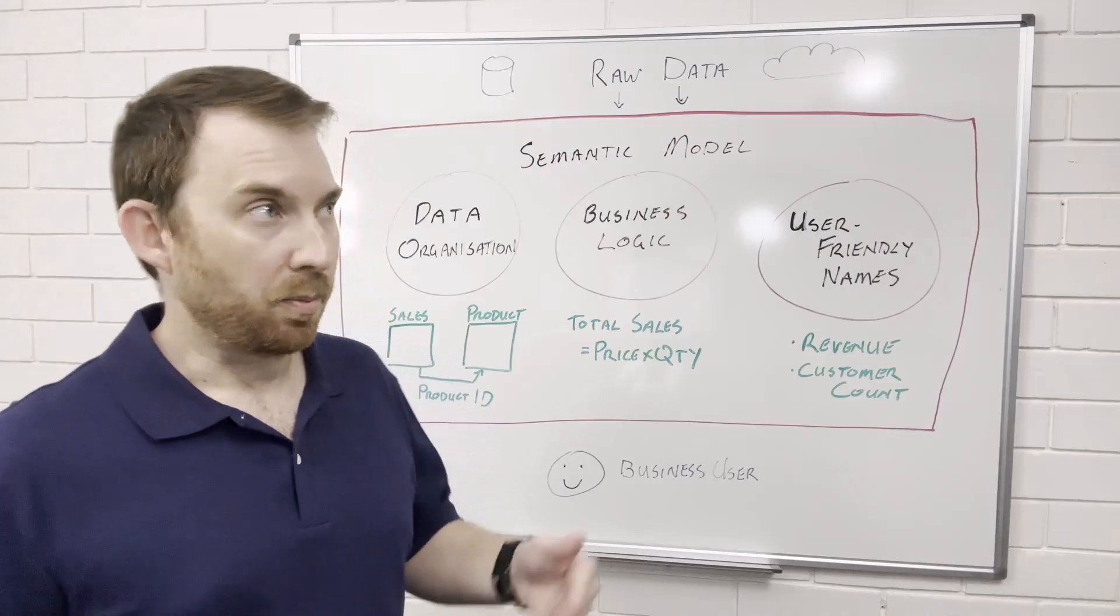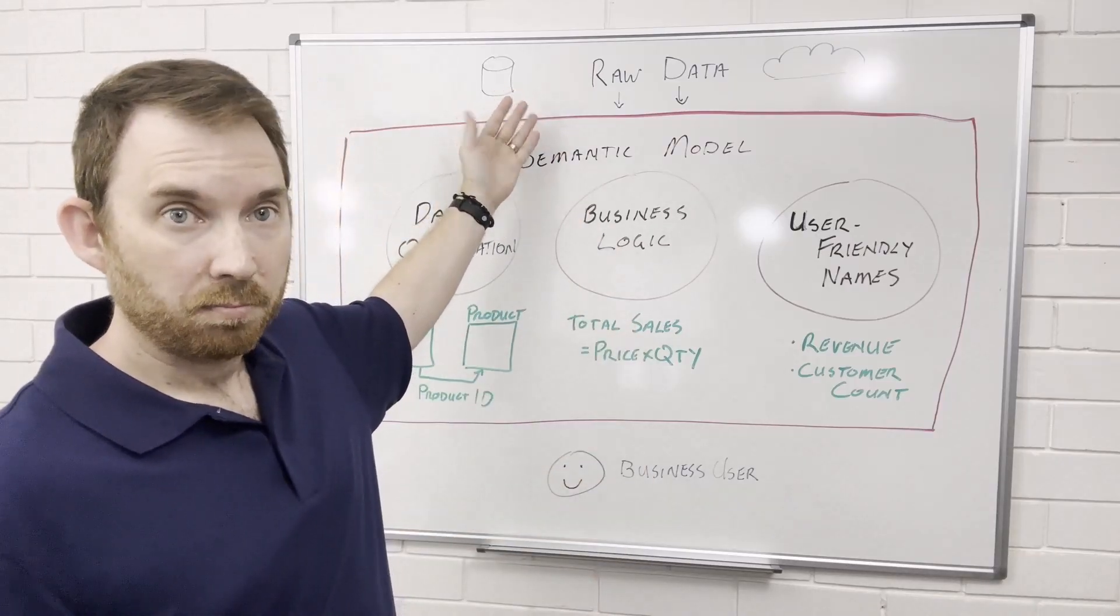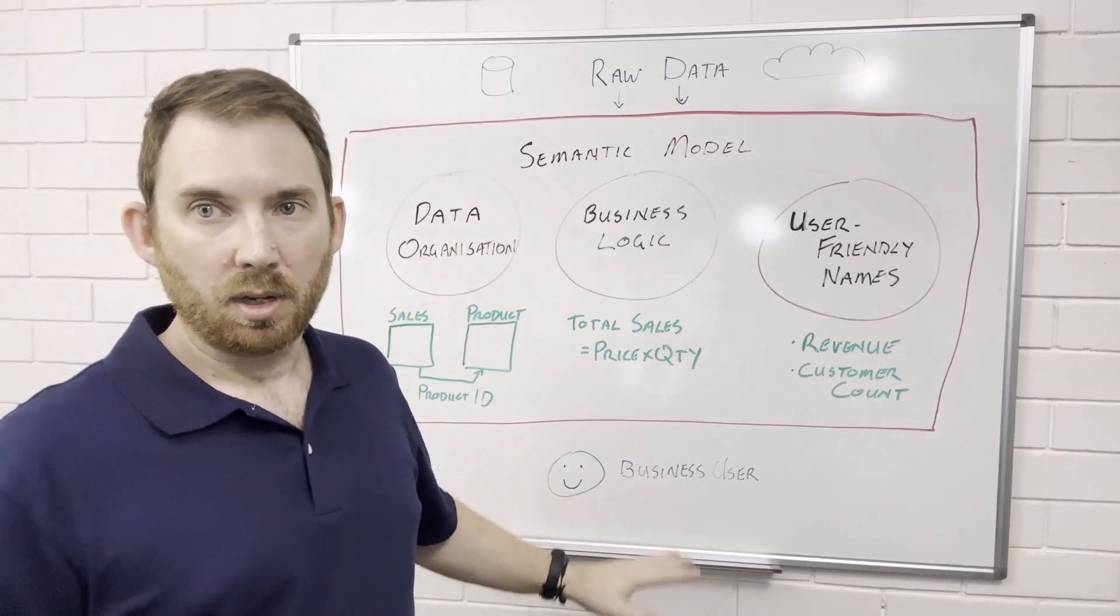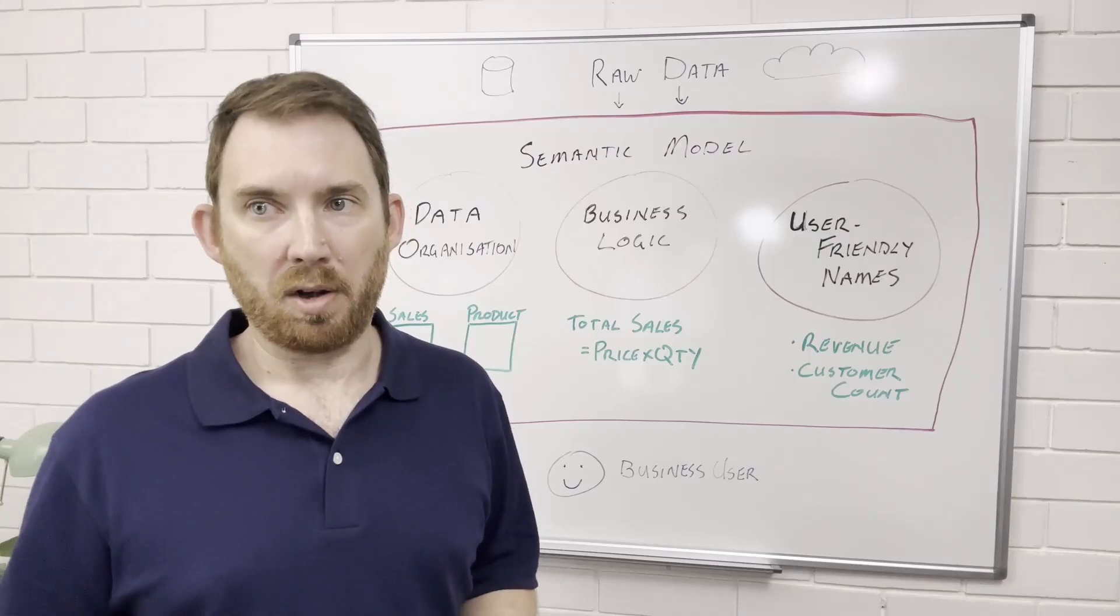So in a simplified example of data coming in to build the semantic model to the outcomes for users, you see how your data can work for you, not the other way around.